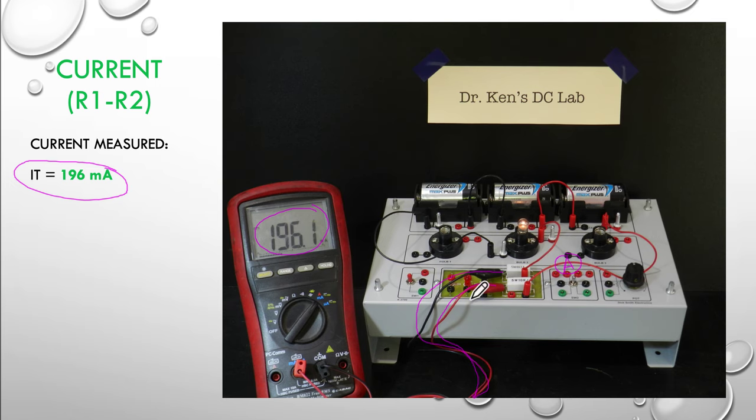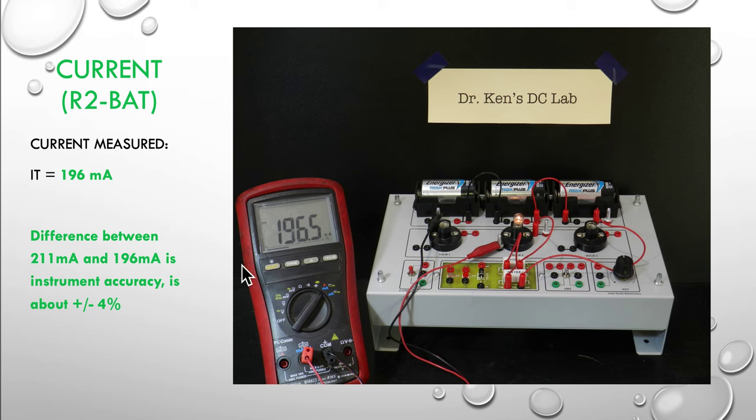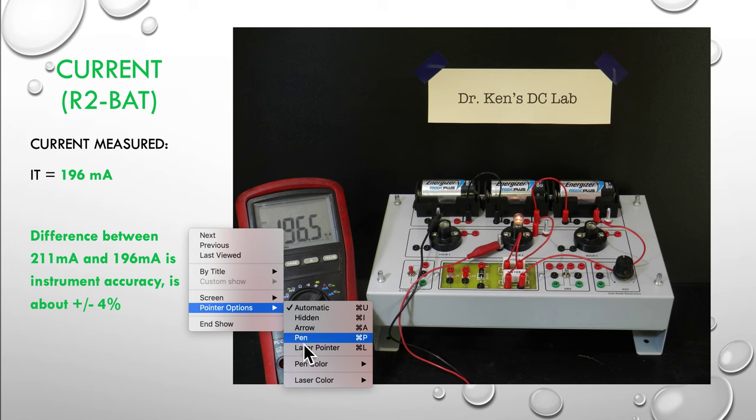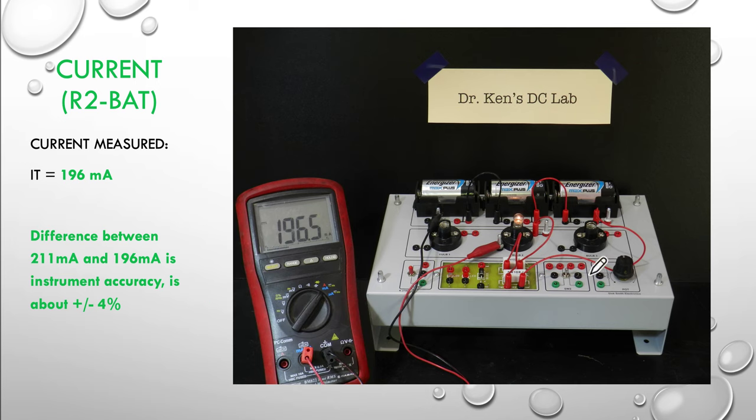Finally I've put the ammeter between the battery and the end. You can see here meter and back, and again still measuring 196 milliamps. From an accuracy perspective we're about plus or minus four percent out, but close enough to demonstrate that basically the current does not change anywhere in a DC series circuit.